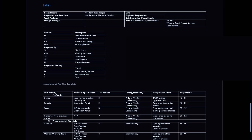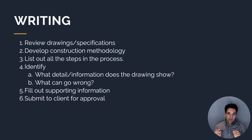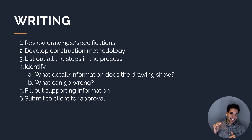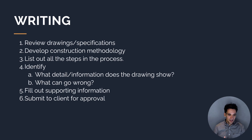Now we understand what an ITP document is and what they look like. The next thing we need to understand is how to write an inspection and test plan. As a construction project engineer or manager, you're certainly going to have to produce some of these. The steps in writing one are: first, review the drawings and specifications for the scope you're writing the ITP for; second, develop the construction methodology — understand the steps in the process; and then list out all of those steps.